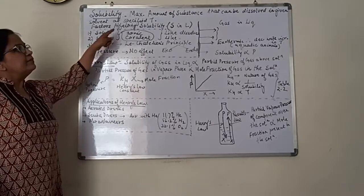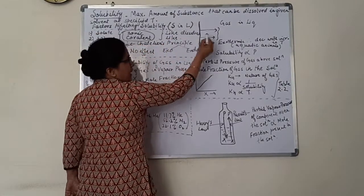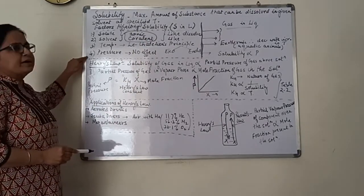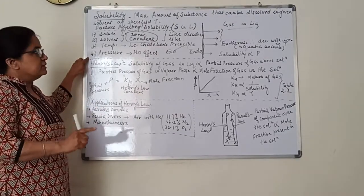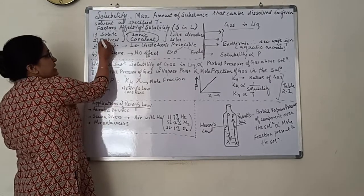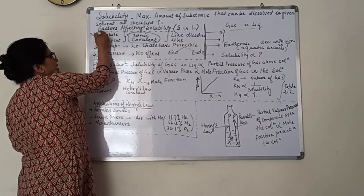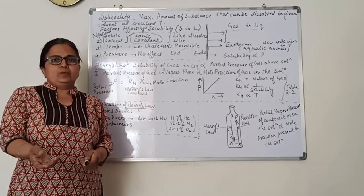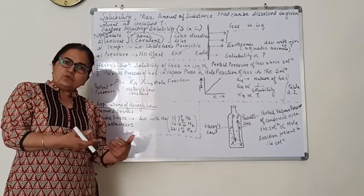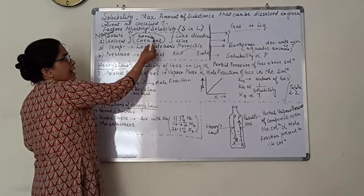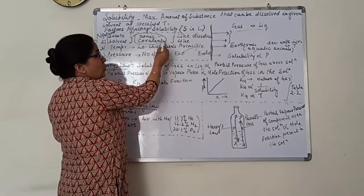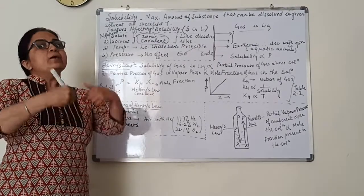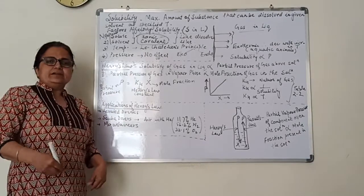We will be talking about the factors that affect solubility of solid-liquid and gas-liquid systems. For solid and liquid, there are four main factors. The first two are closely related: the nature of solute and solvent. Ionic compounds are more soluble in polar solvents, and covalent compounds are more soluble in non-polar solvents. This is mainly referred to as 'like dissolves like.' So the solubility of ionic compounds is more in polar solvents, and covalent compounds dissolve better in organic solvents.